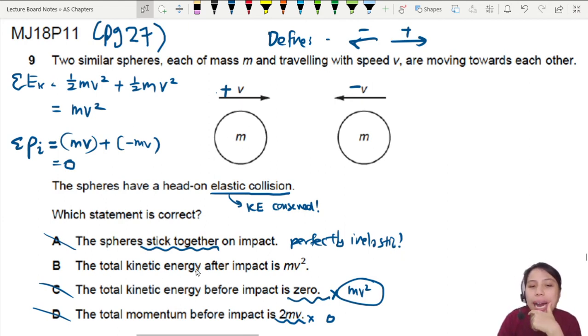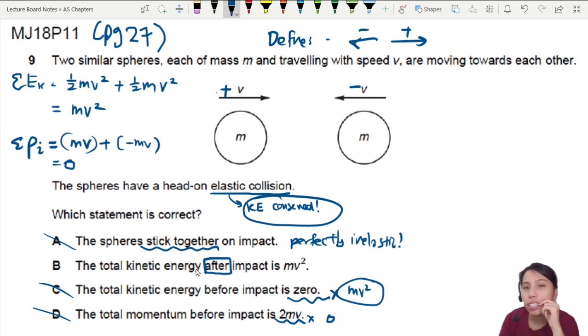Total kinetic energy after impact is mv squared. Hmm. Now remember when I said if this is an elastic collision that kinetic energy is conserved? By conserved, I mean that the final kinetic energy of everyone added together should also be the same as the initial kinetic energy, which is what we found earlier, mv squared.